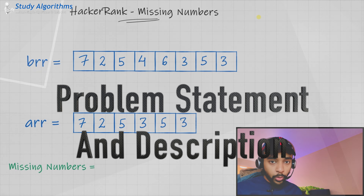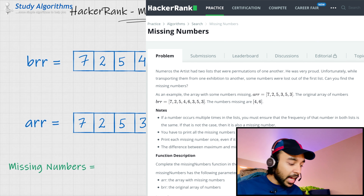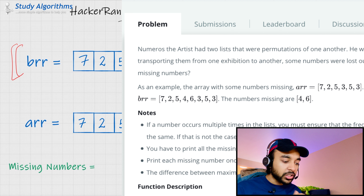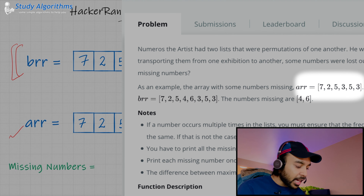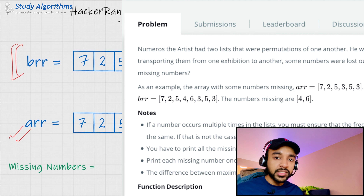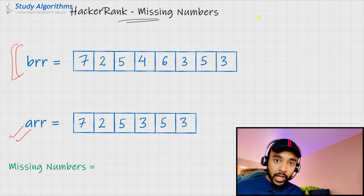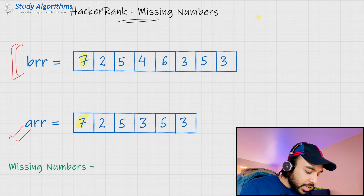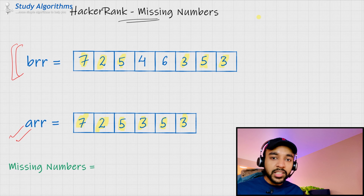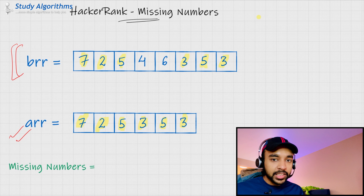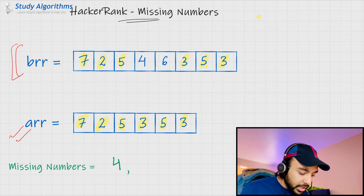The best way to understand a problem is to understand the given test case. In the problem statement, it is given that you have an artist who has this array brr. This artist wants to transport all of these elements to some another array that is arr. But what happens is, while he is transporting all of these numbers, he misses out some of the elements. In this case, you can see he got these numbers but he missed out on the numbers 4 and 6. So, you need to output 4 and 6 as your answer — the missing numbers are 4 and 6.